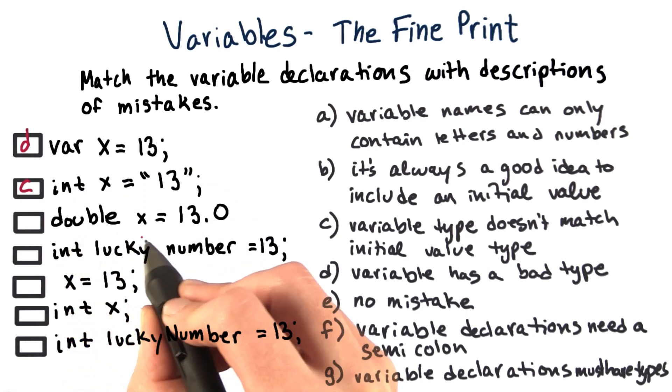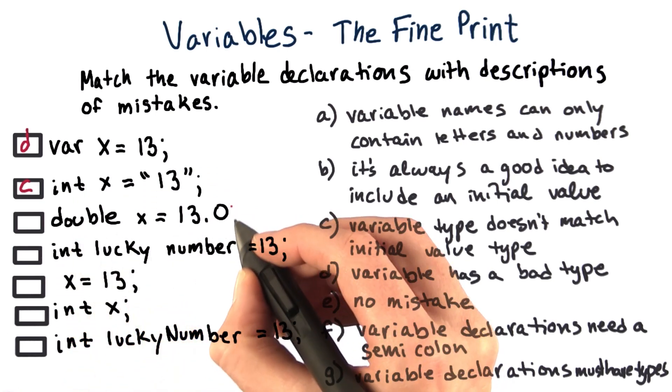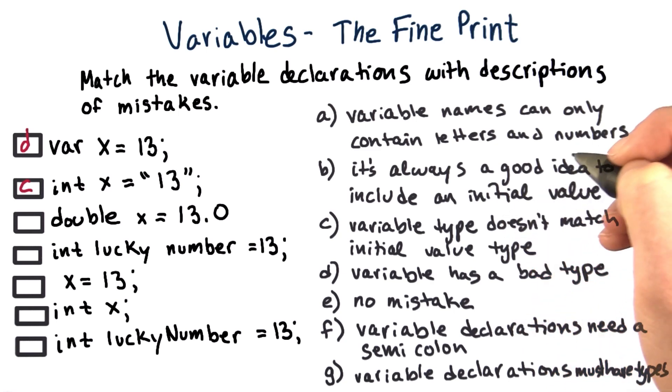The next one, double x equals 13.0. Well, we're missing the semicolon. That was an option. Looks like F.